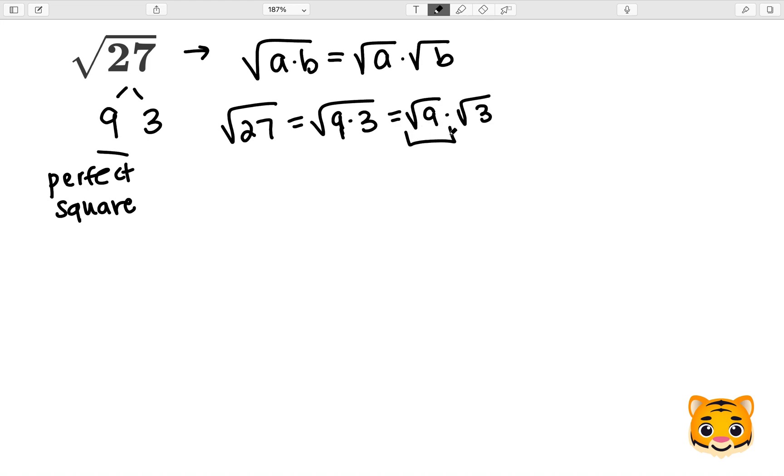We can look at the square root of 9 and see that because 3 times 3 equals 9, the square root of 9 will be 3. Therefore, the square root of 27 can be simplified to 3 times the square root of 3.